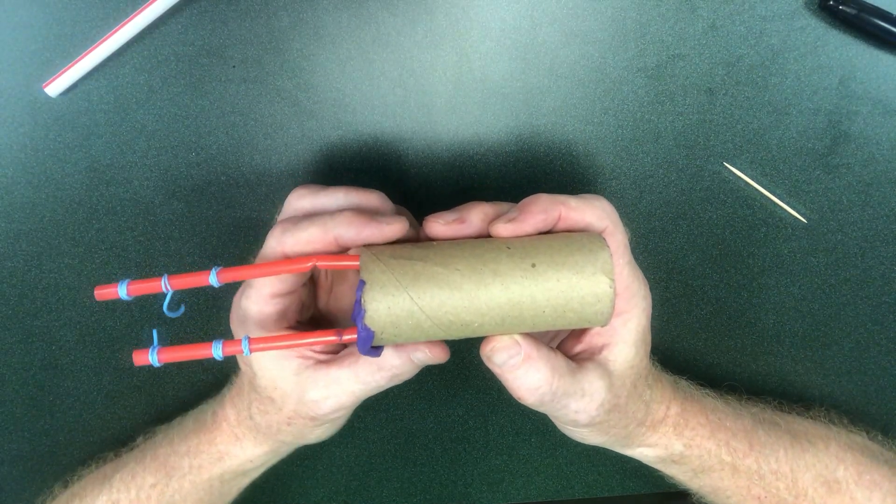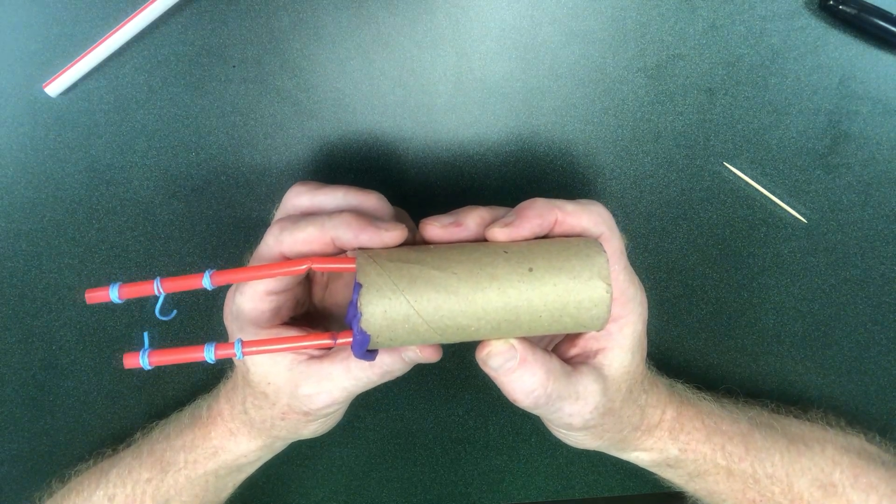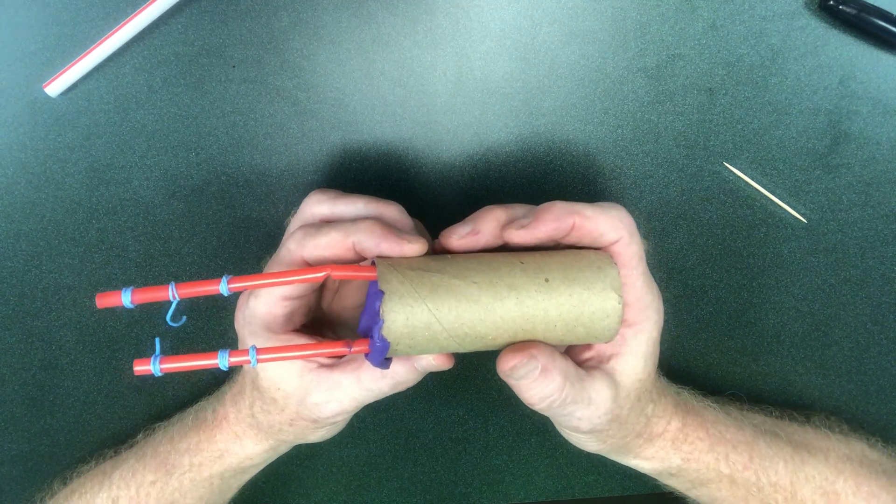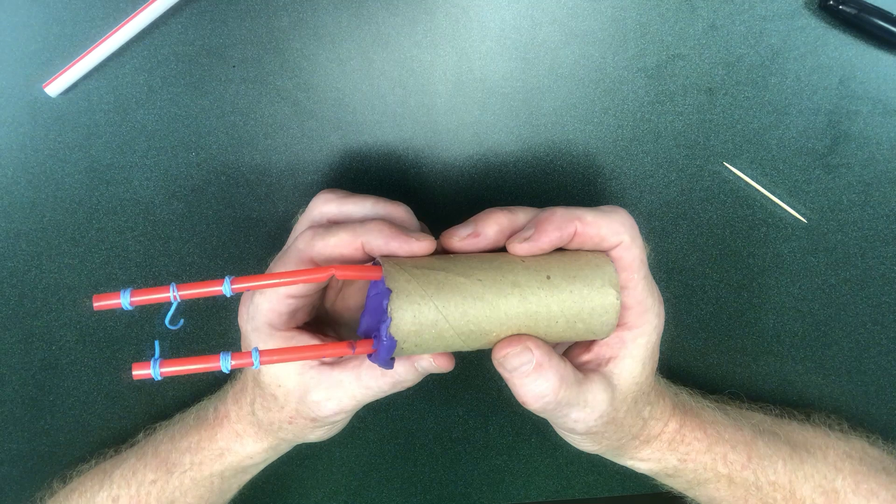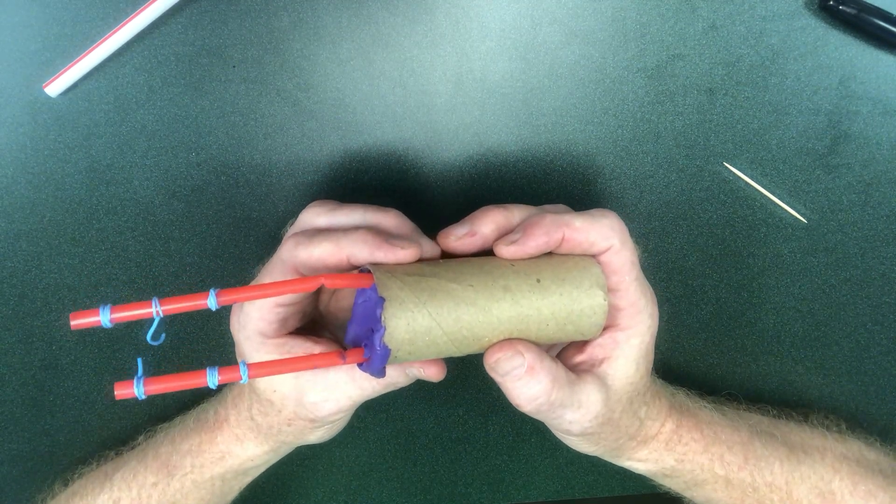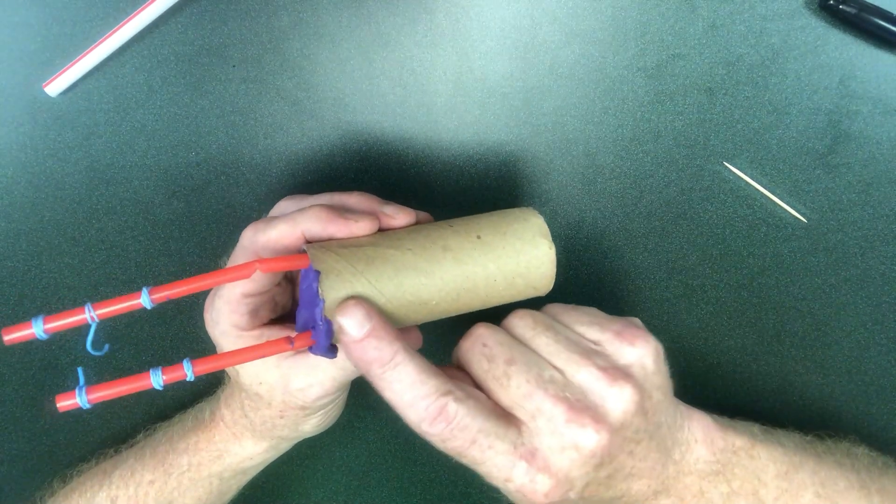Okay, so during the second part of the activity, you want to have your groups get together and combine their prosthetic fingers into some sort of prosthetic hand. That might mean going from a two-fingered hand to a four-fingered hand, even using a thumb.